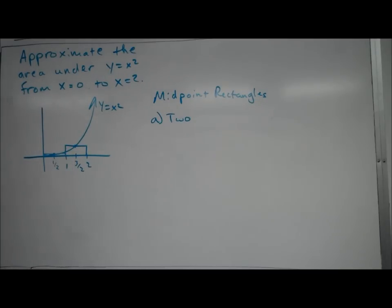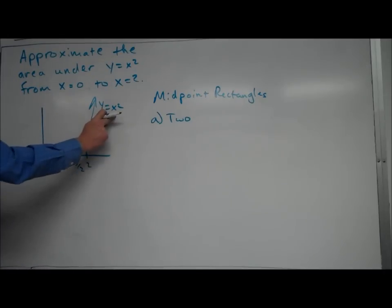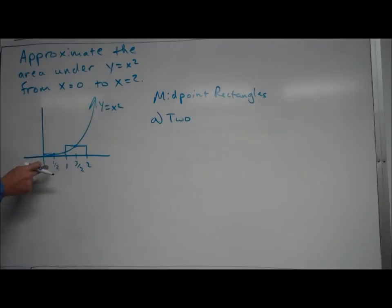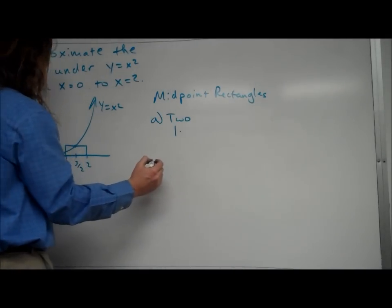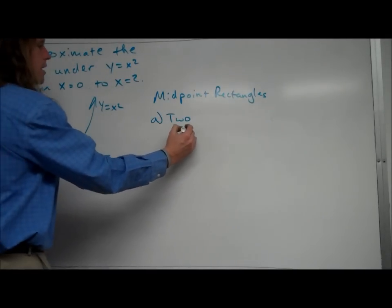Okay, now we've got to find the area. The first one has a width of one. To figure out the height, we take one-half, plug it into x, so we get the height is one-fourth. So it's going to be—sorry—a width of one, a height of one-fourth.